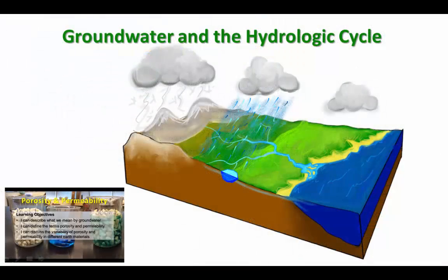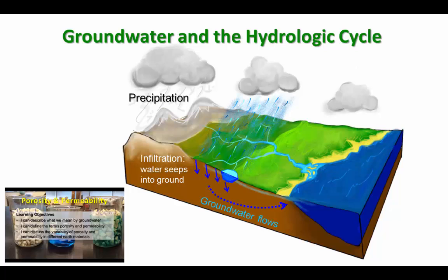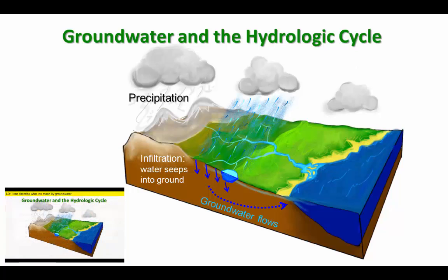Water on the land surface may infiltrate through the soil and into the sediment and rock below. This is groundwater. This water is moving slowly downslope, eventually returning to the ocean to complete the hydrologic cycle.